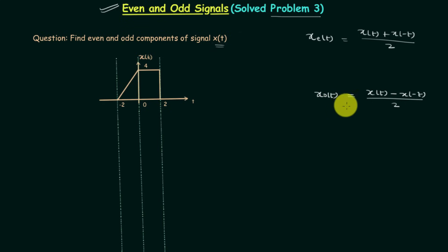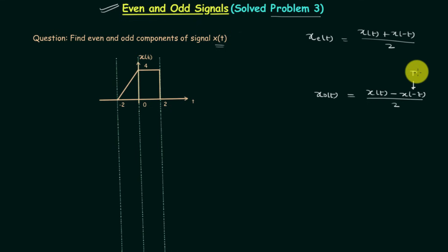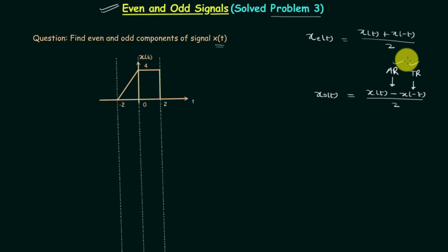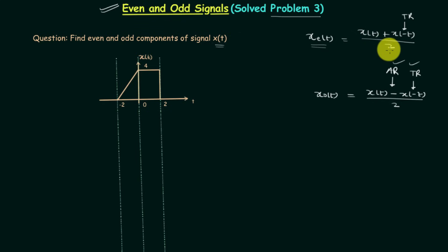XO(t), the odd component, is equal to X(t) minus X(-t) over 2. To obtain the odd signal, instead of adding the time-reversed signal you subtract it. We perform the time reversal to obtain X(-t), then perform the amplitude reversal to obtain minus X(-t), and then add that signal to the original signal and divide by 2.